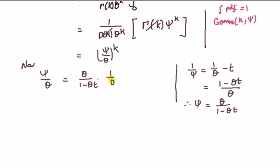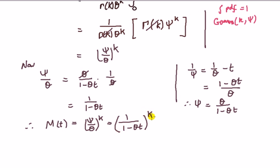So I can write here now that is equal to theta times 1 minus theta t divided by phi, that's the same as saying 1 over theta. These thetas cancel out and I'm left with 1 over 1 minus theta t. Therefore the MGF that we want, M of t, which is equal to phi over theta to the power of k, it's going to be equal to 1 over 1 minus theta t and the whole thing to the power of k.